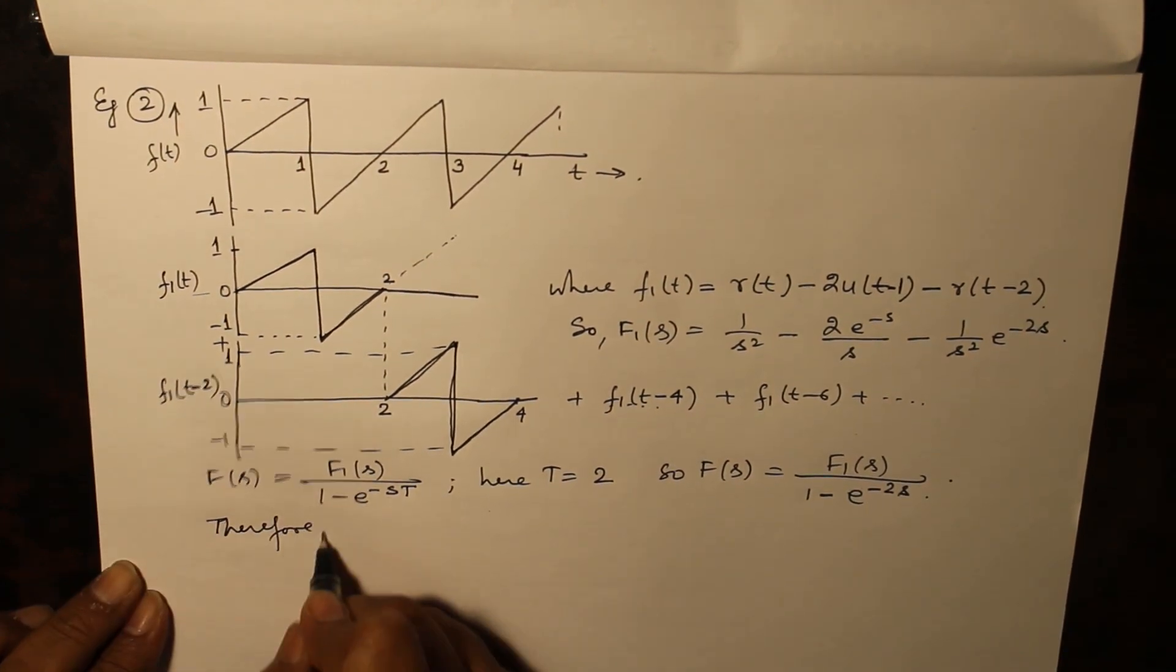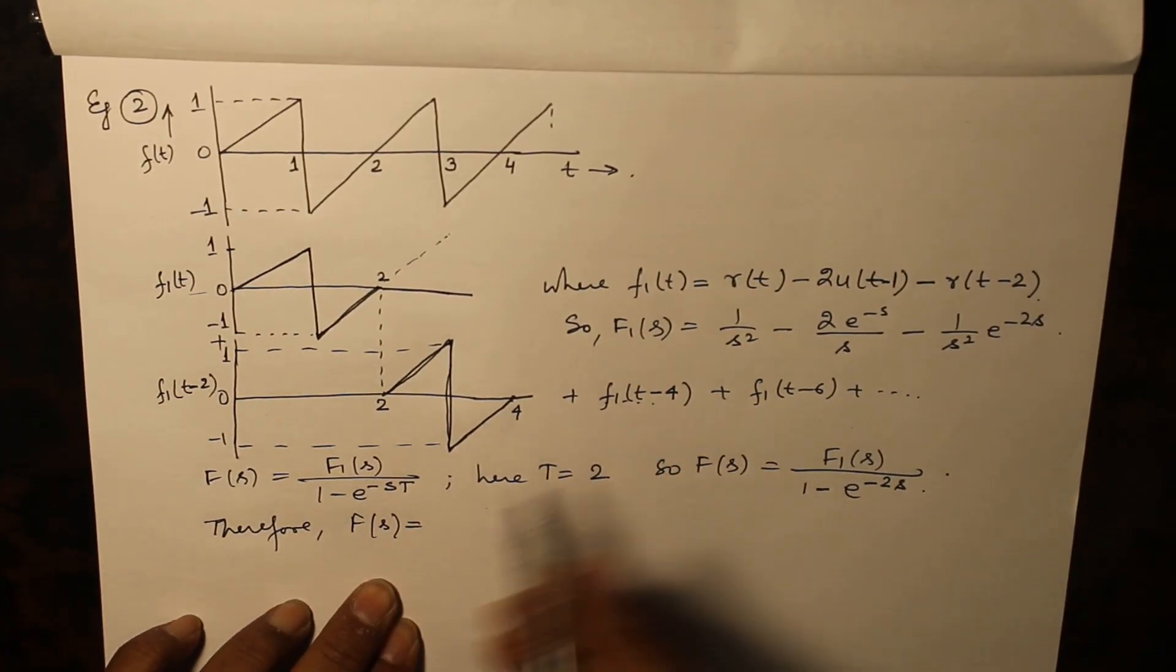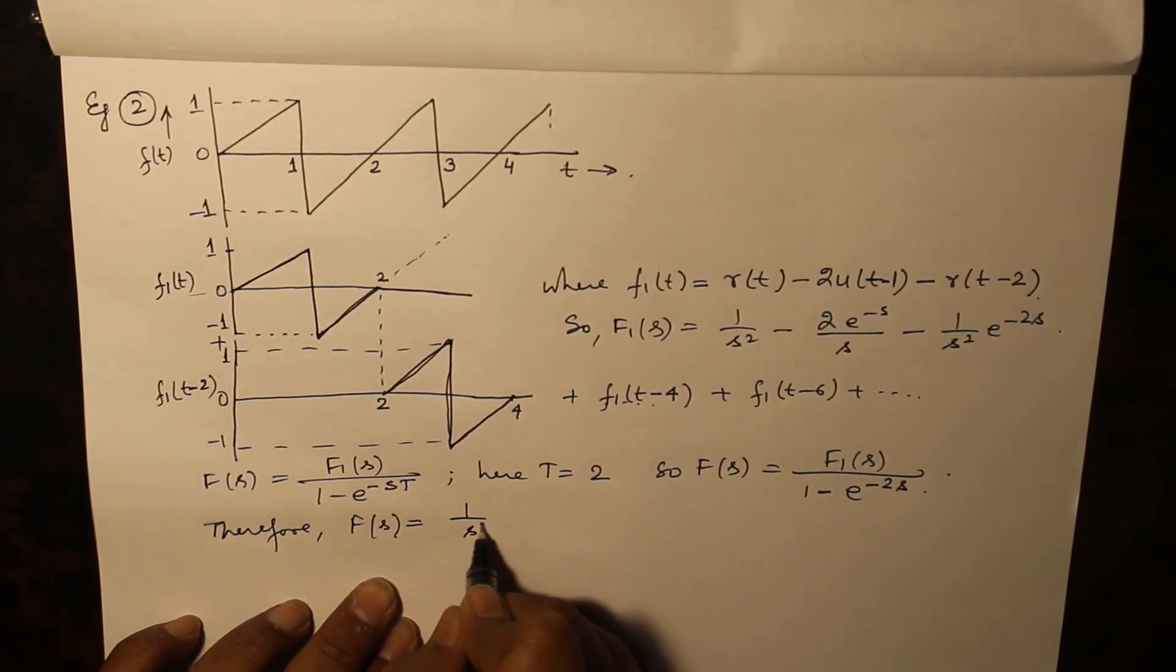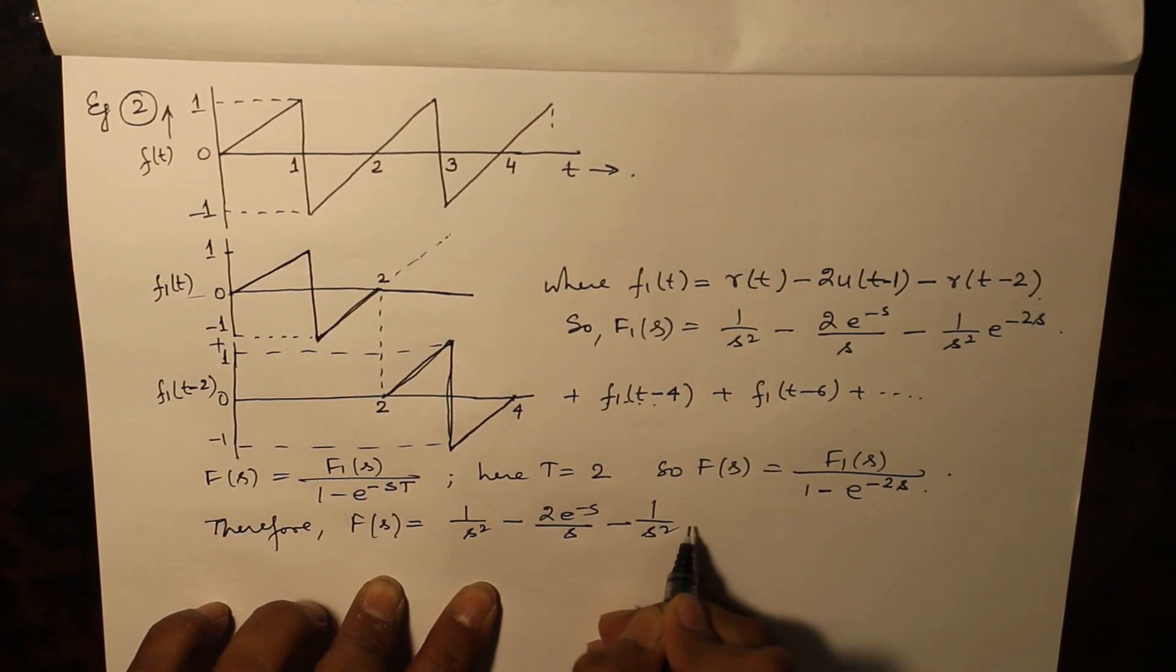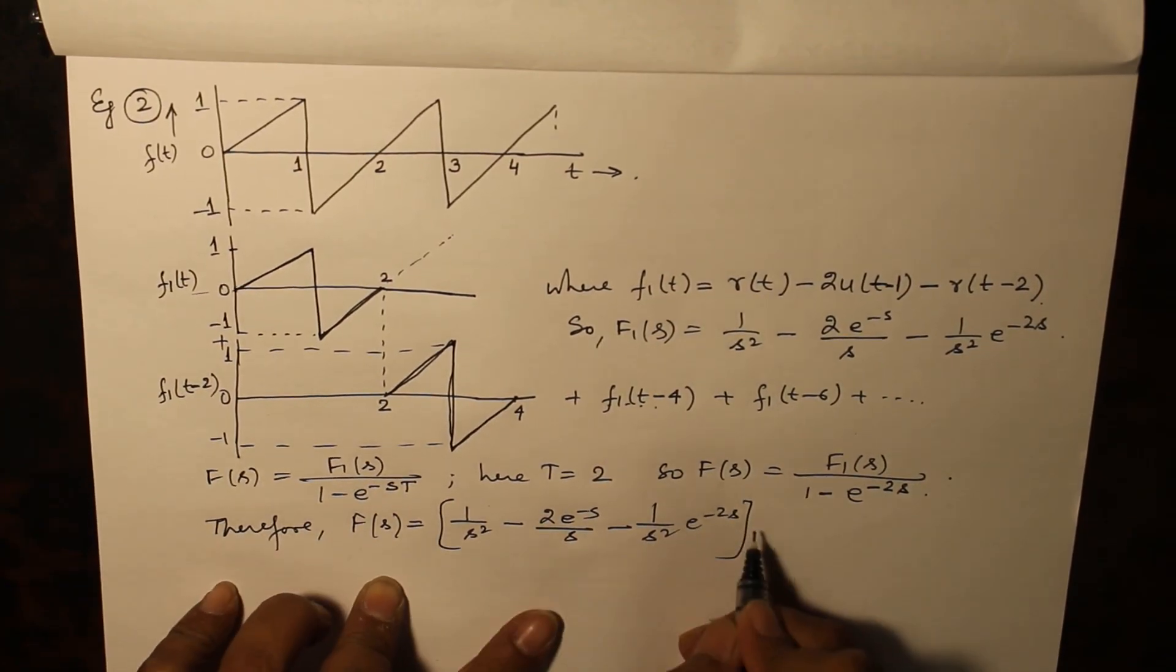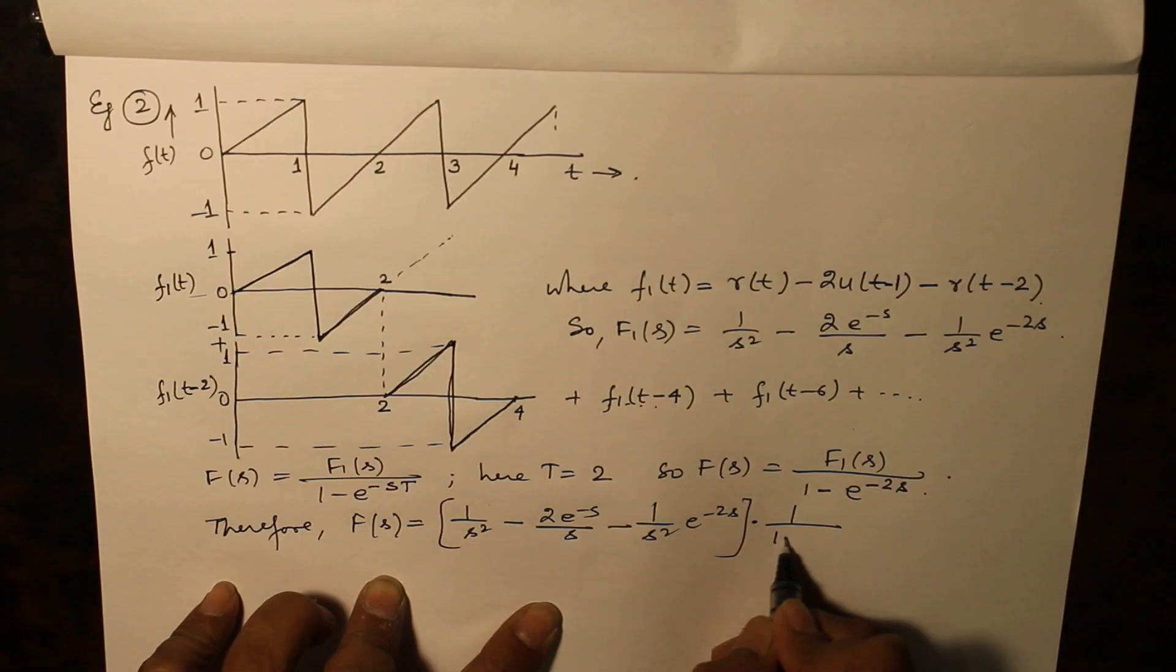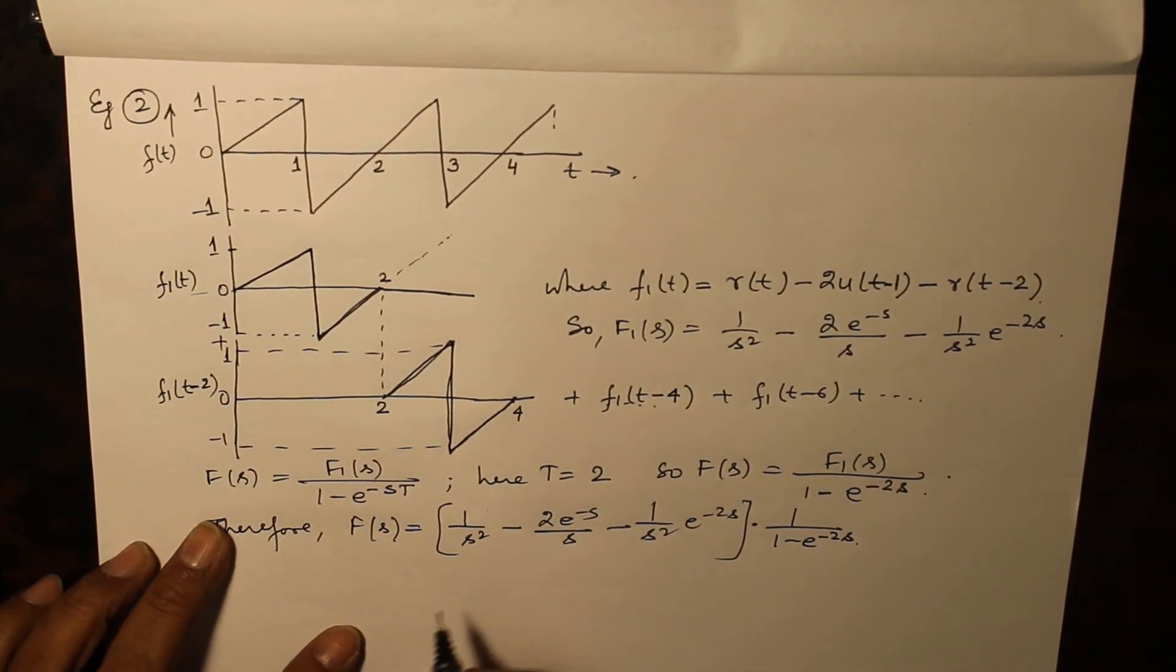Therefore F(s) can be written as 1 over s squared minus 2e raised to the power minus s over s minus 1 over s squared e raised to the power minus 2s, and everything multiplied by 1 over 1 minus e raised to the power minus 2s, which can be further simplified.